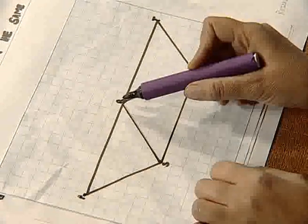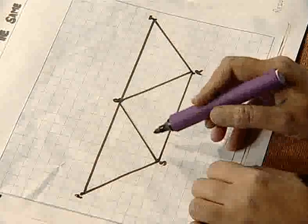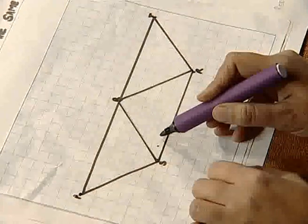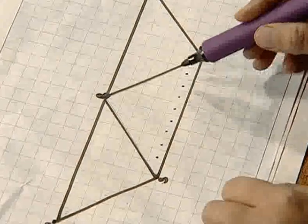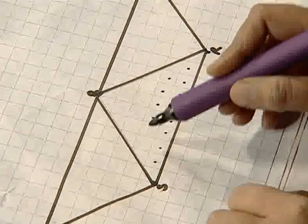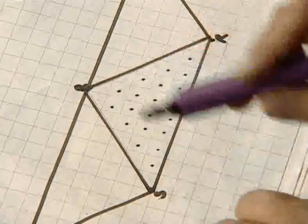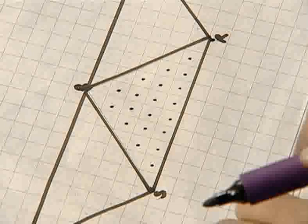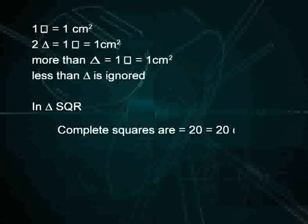First, we take triangle QRS. The number of complete squares are counted: 1, 2, 3 ... up to 20. So we find the number of complete squares is 20. Since one complete square equals 1 centimeter square, 20 complete squares equals 20 centimeter square.